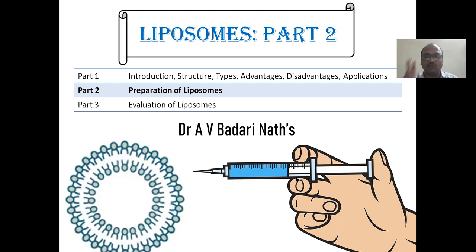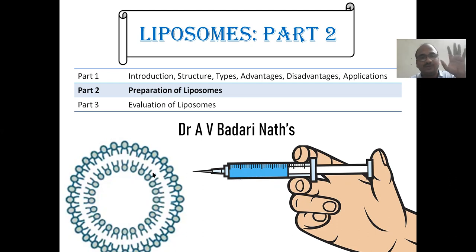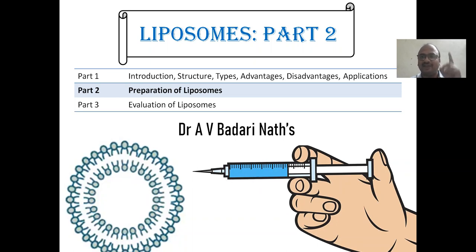You can see the injection methods here. Two methods we are using mainly — key important: ethanol injection, ether injection. Both start with E — ethanol injection, ether injection. These are two very, very important ones. With this, you can beautifully prepare the liposomes. You can see this is a liposome, blue color liposome, obtained from the beautiful injection of ethanol — very, very important for all your regular examinations as well as interviews.